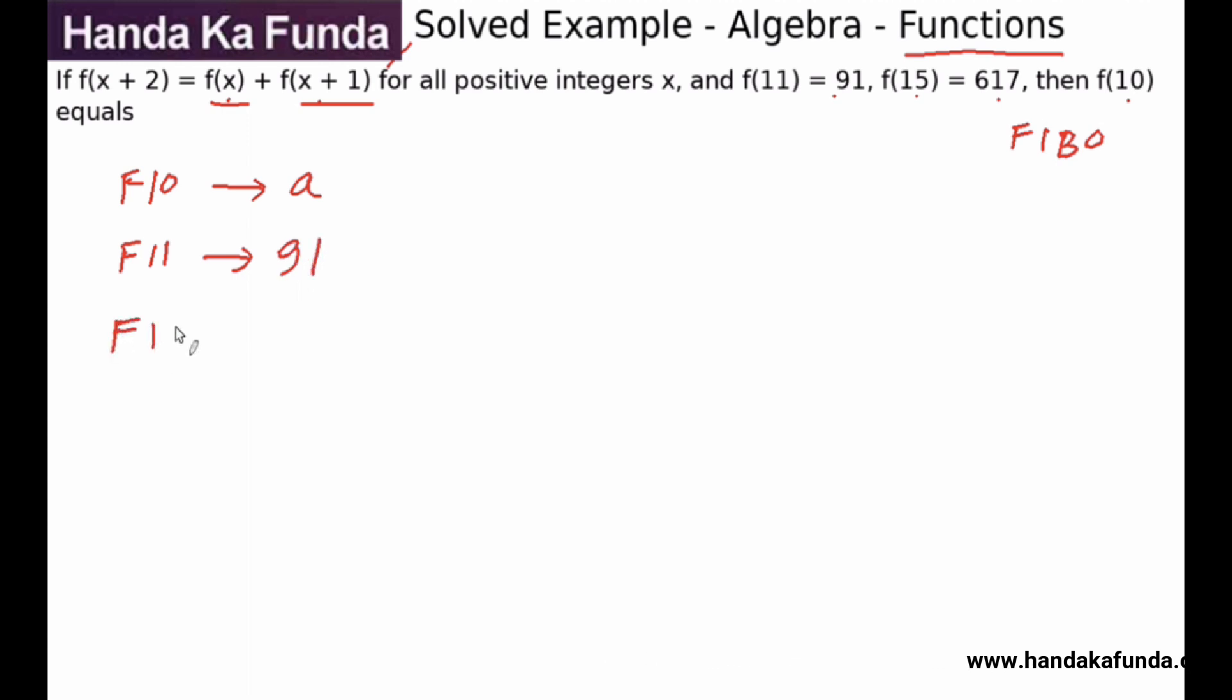So what will be f12? f12 is the sum of the previous two values, so that will be 91 plus a. What will be f13? Sum of the previous two values, so 91 and 91, 182 plus 91 is 273 plus a and a makes it 2a.